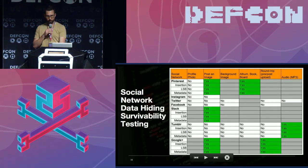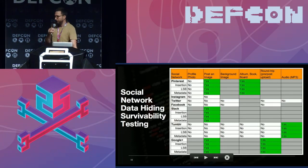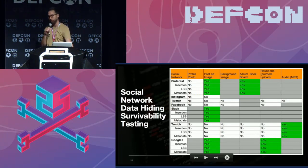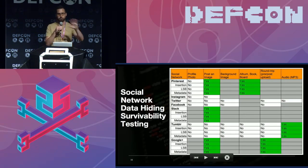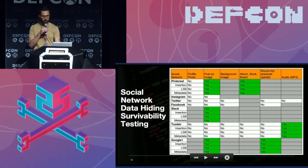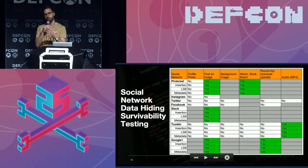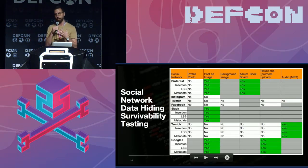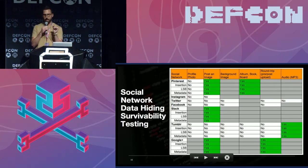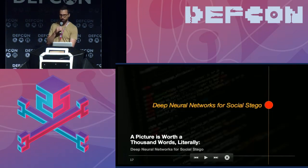To build off Mike's work, we have a lot of results about how we can post and download images and see what effects the different social networks are rendering in this round trip. We want to build on that — for instances where social networks are doing compression or back-end re-rendering, we want to find a way to retain the ability to implant stego, upload the image, download it, and have that message survive. So: deep learning.